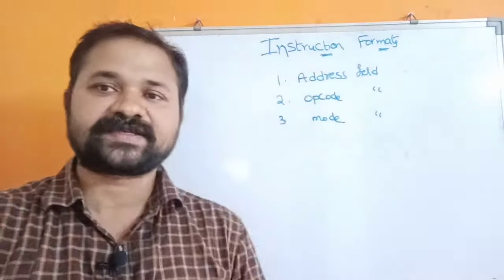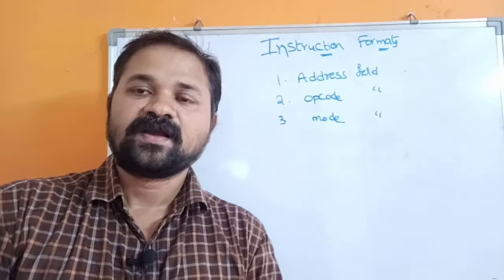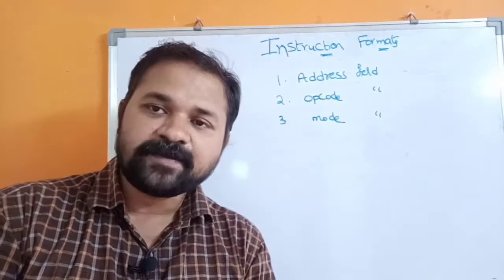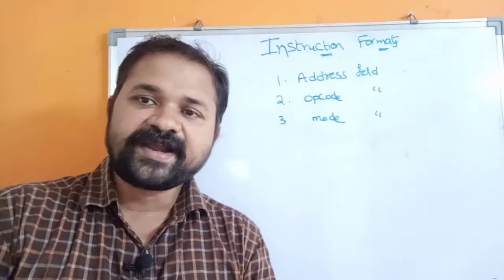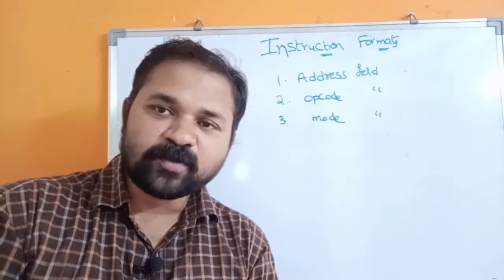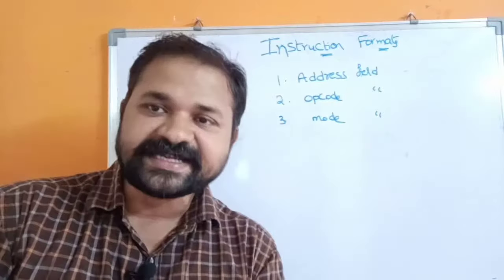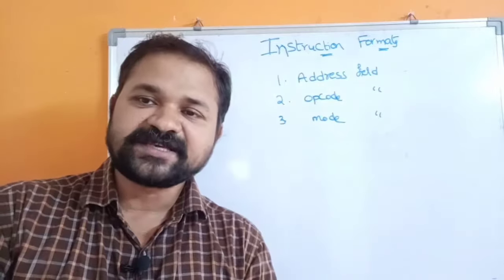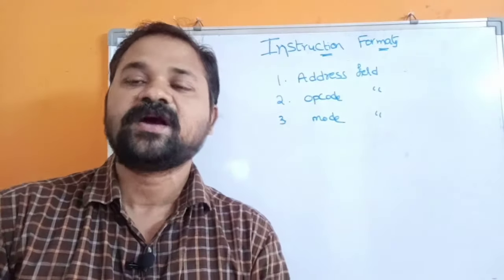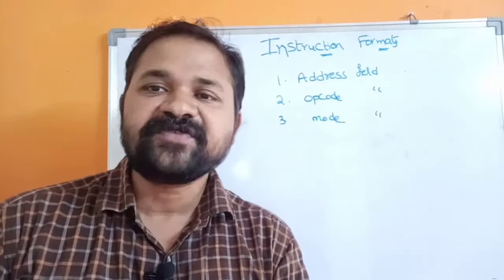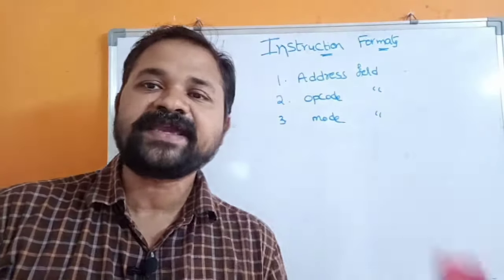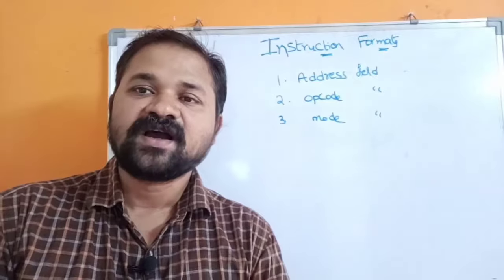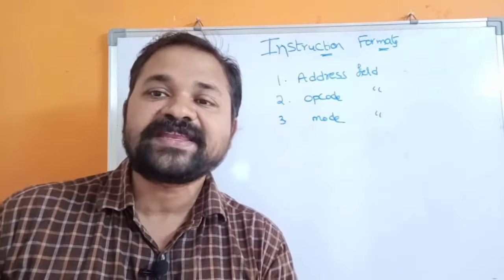The first field is the address field. The address field specifies the address of the operand. Generally, an operand resides either in memory or a register, so the address field specifies the address of the memory or the address of the register. The opcode field specifies the operation that is to be performed.